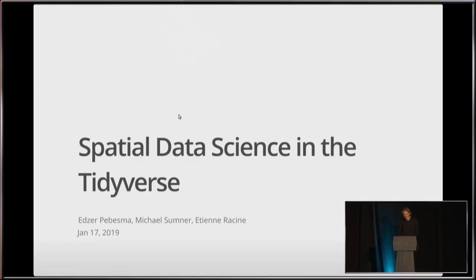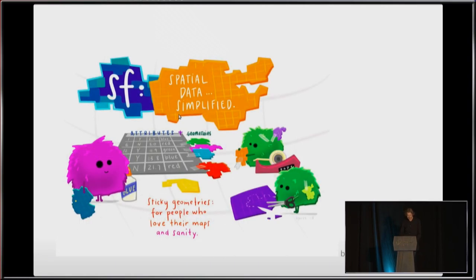So this is joint work with Michael Sumner, who is regrettably not here, and Etienne Racine, who is here sitting in the fourth row. And I'm pretty confident I can promise you that I will be the only talk in this session without moving images.